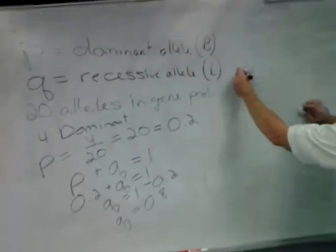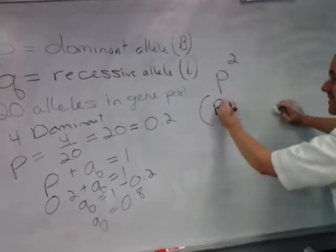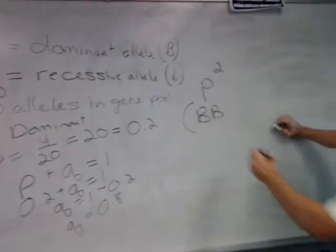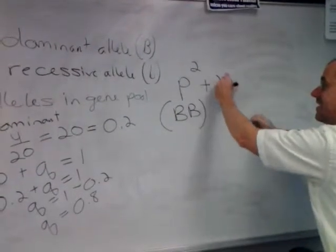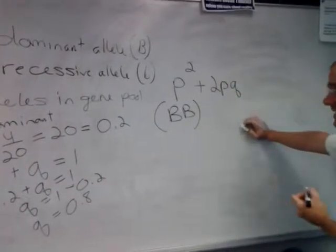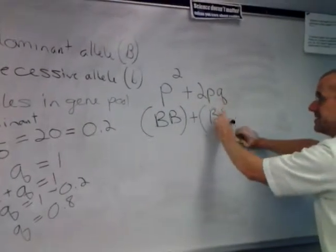I can take P squared, and that would represent the individuals that were big B, big B. I can add up those individuals to all the heterozygous individuals. And you remember, P is big B, Q is little b.